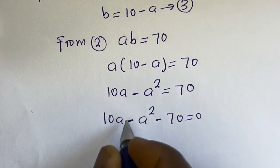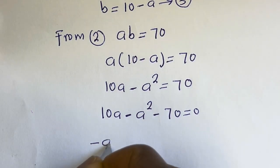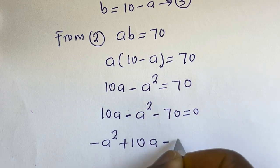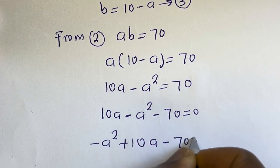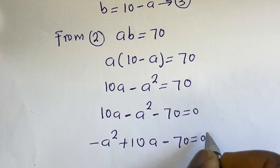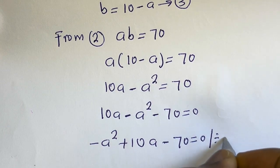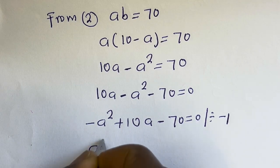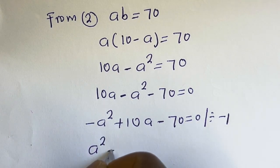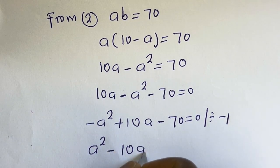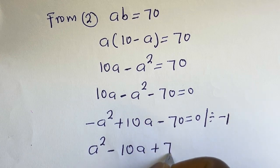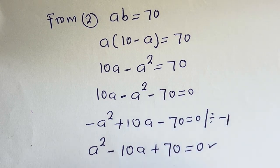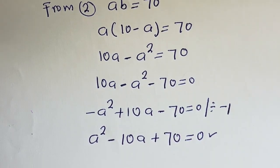Then 10A minus A squared minus 70 is equal to 0. Let's put this in standard form: minus A squared plus 10A minus 70 is equal to 0. Now let's divide through by minus 1, then A squared minus 10A plus 70 is equal to 0. This is a quadratic equation.